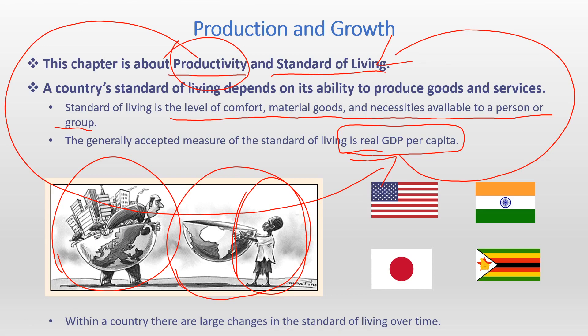Even within a country there are large changes in standard of living over time. In the United States, some people have very good standard of living and some have very poor standard of living. As countries develop and their GDP increases, real GDP per capita also improves, which raises standard of living. The country becomes richer, can afford more houses and cars, and people have more money to satisfy their needs and wants.